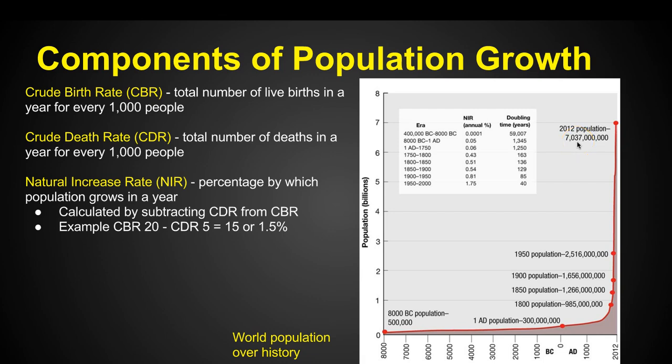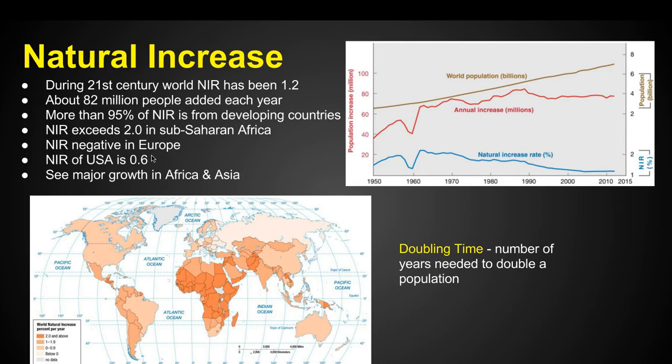As geographers, we ask why. We can say the birth rate is up and the death rate is down, but we also dig in further and ask why is the birth rate up and why are fewer people dying? During the 21st century, the world's NIR has been 1.2, which basically means we're growing — about 82 million people are added each year.